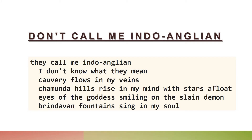The poem continues: 'They call me Indo-Anglian — I don't know what they mean. Kaveri flows in my veins, Chamunda Hills rise in my mind with stars afloat, eyes of the goddess smiling on the slain demon, Brindavan fountains sing in my soul.' The poet does not approve of the term Indo-Anglian because his identity is very intact — his belongingness to his culture is very strong. His rivers, hills, and goddess are part of him. The entire culture and tradition of India flows in his veins.